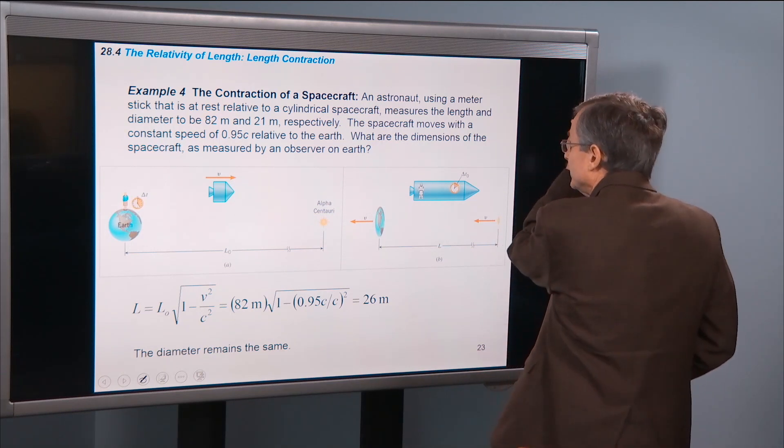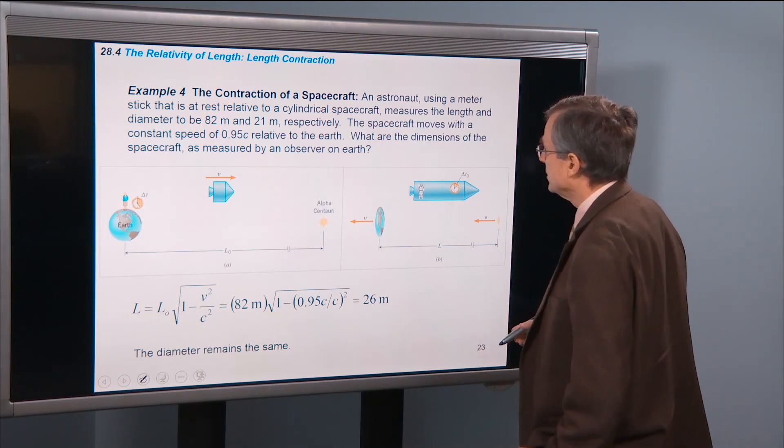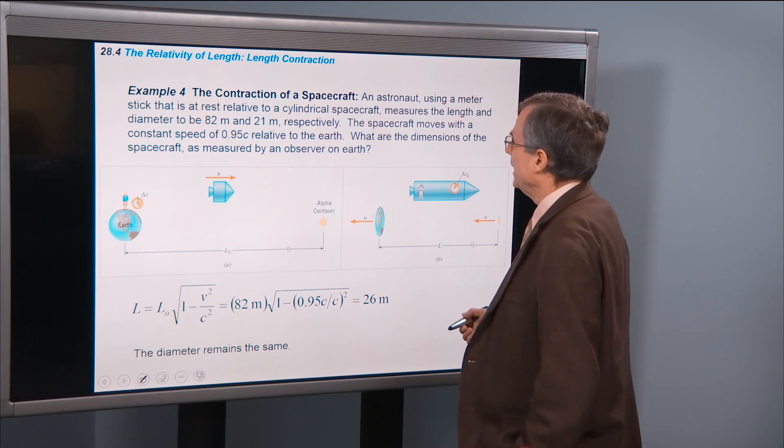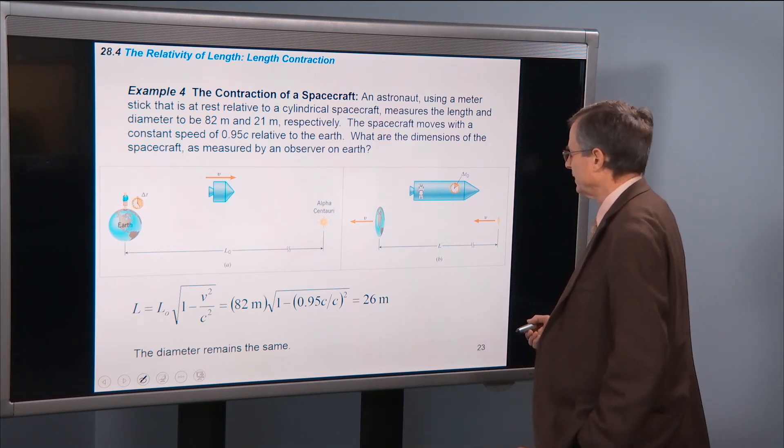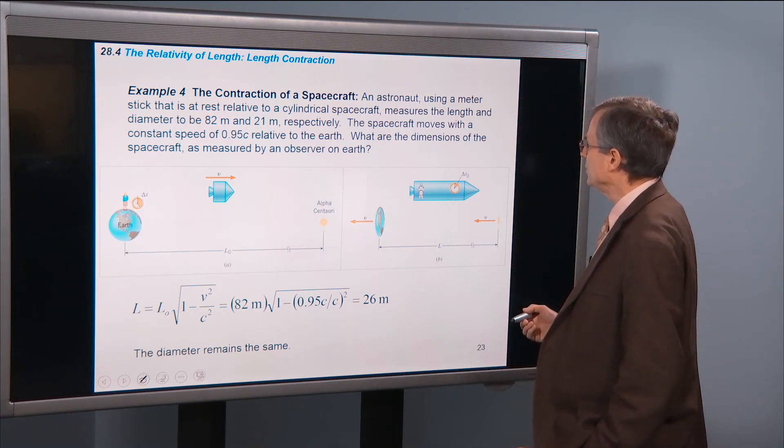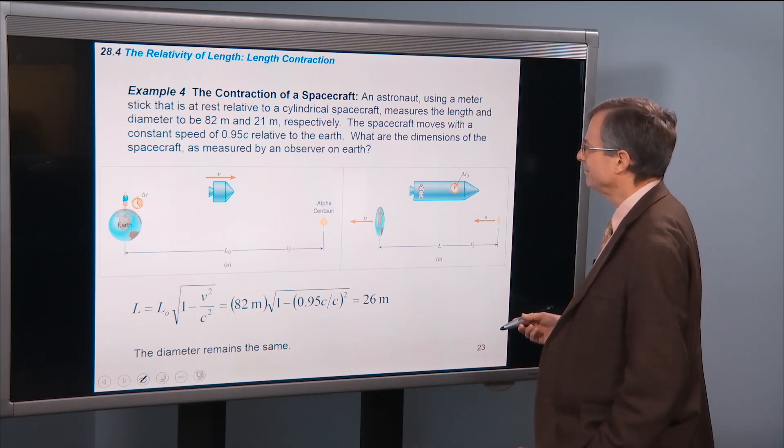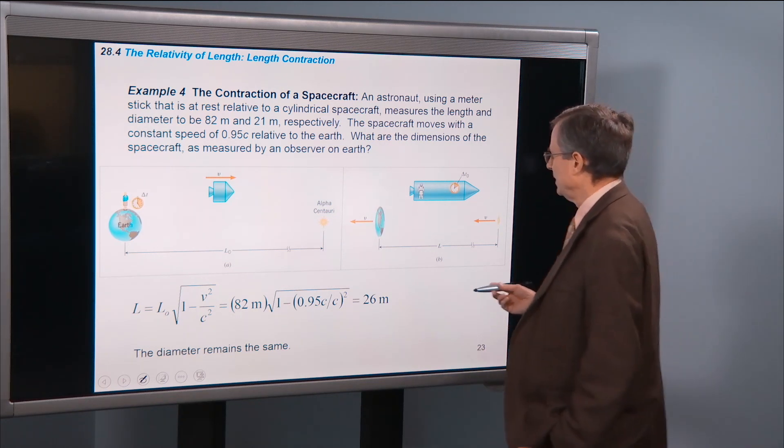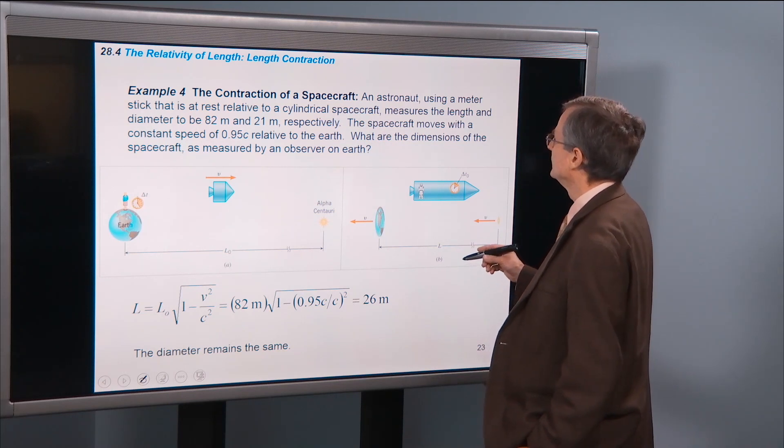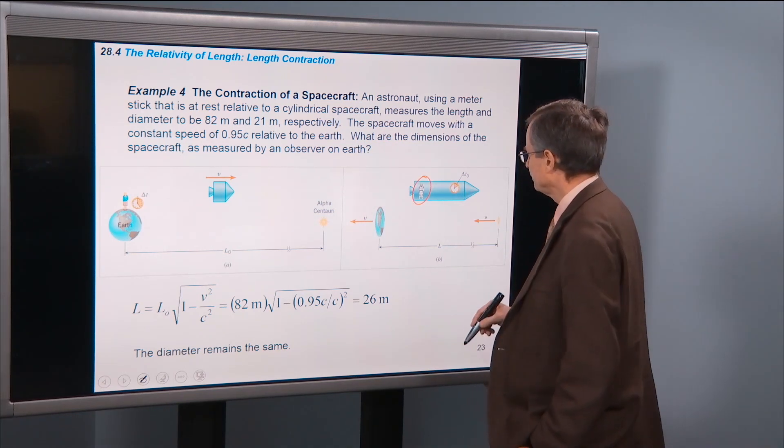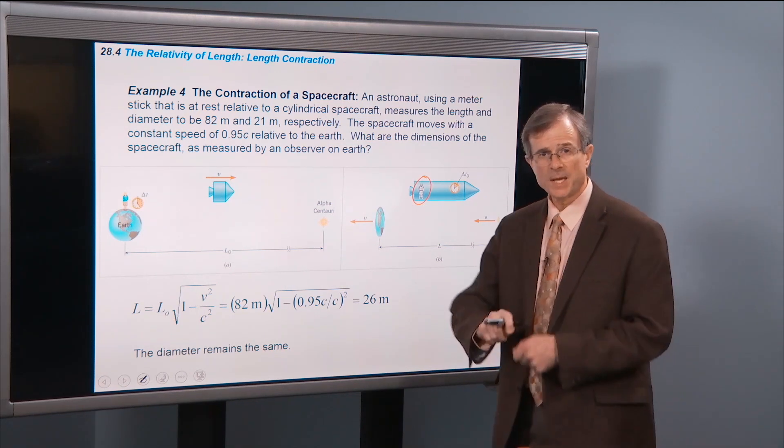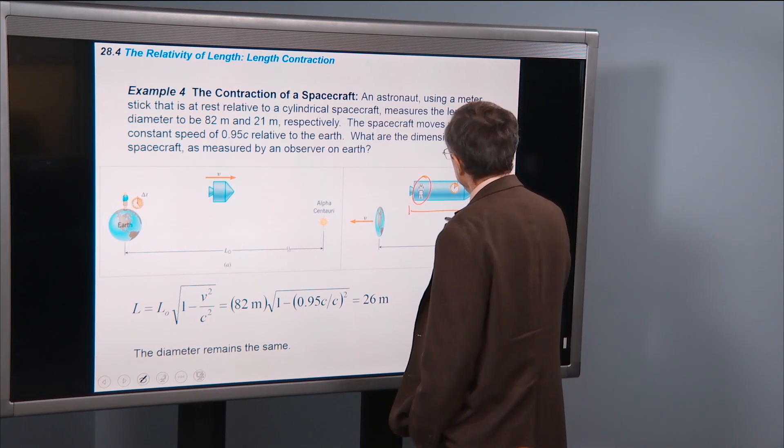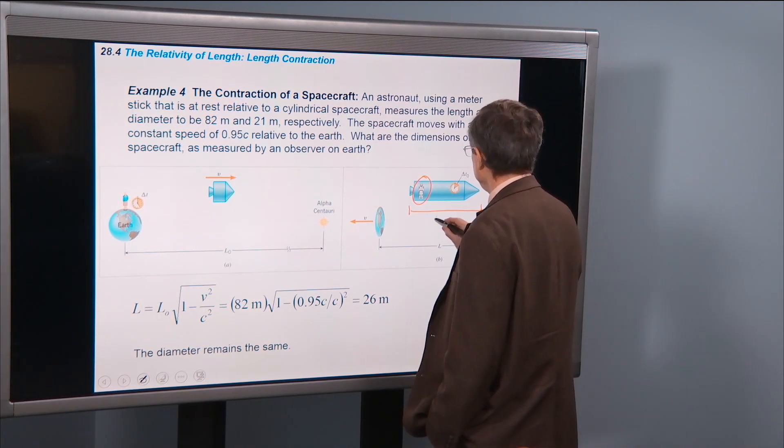Contraction of the spacecraft. An astronaut using a meter stick is at rest relative to a cylindrical spacecraft, measures the length and diameter to be 82 meters and 21 meters, respectively. The spacecraft moves with a constant speed of 0.95c relative to the Earth. What are the dimensions of the spacecraft as measured by an observer on the Earth? All right. So first of all, the astronaut. Here's our astronaut. He takes out his tape measure, and he measures the length of the spacecraft to be 82 meters.